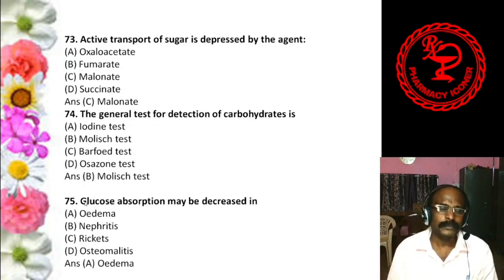Question 73: Active transport of sugar is depressed by — Oxaloacetate, Fumarate, Malonate, or Succinate. The answer is malonate. Question 74: The general test for detection of carbohydrate is — Iodine test, Molisch test, Barfoed test, or Osazone test. The answer is the Molisch test — all carbohydrates show a positive Molisch test, producing a ring structure between the two layers.